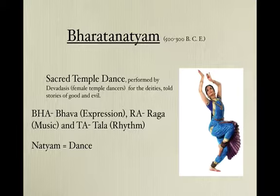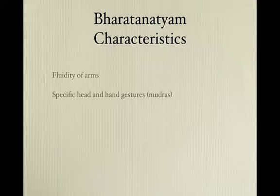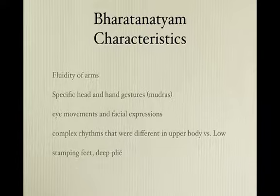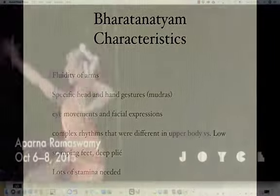Bharatanatyam told stories of good and evil. Characteristics include extremely fluid and expressive arms, specific head and hand gestures called mudras, eye movements and animated facial expressions, complex rhythms with contrasting upper and lower body movement, lots of stamping feet, and deep plié — a bend in the knees. The dancer typically stays in a very low position for much of the dance, and a great deal of stamina is required.